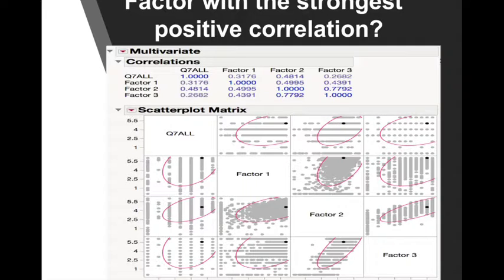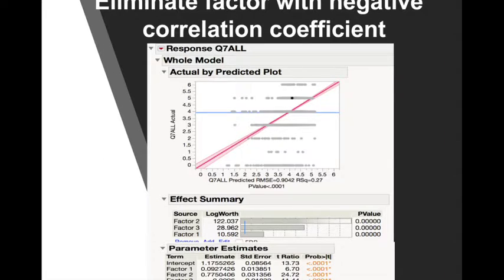After getting those three factors, we used a multivariate analysis to find the correlations. As you can see from the chart, Factor 1 has a positive 0.31776 correlation to Q7O overall ratings, Factor 2 has a positive 0.4814 correlation to Q7O overall ratings, and Factor 3 has a positive 0.2682 correlation to Q7O overall ratings.